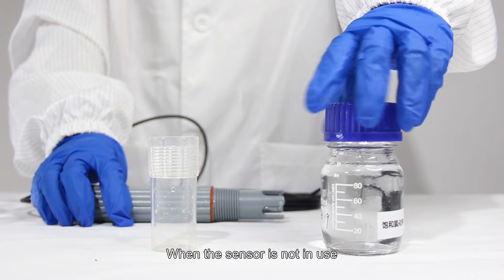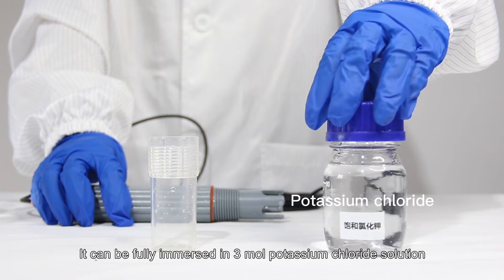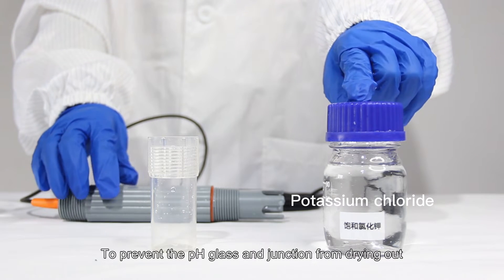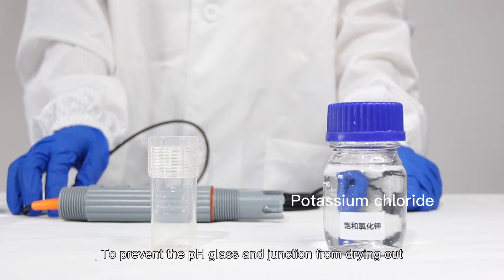When the sensor is not in use, it can be fully immersed in 3 mL potassium chloride solution to prevent the pH glass and junction from drying out.